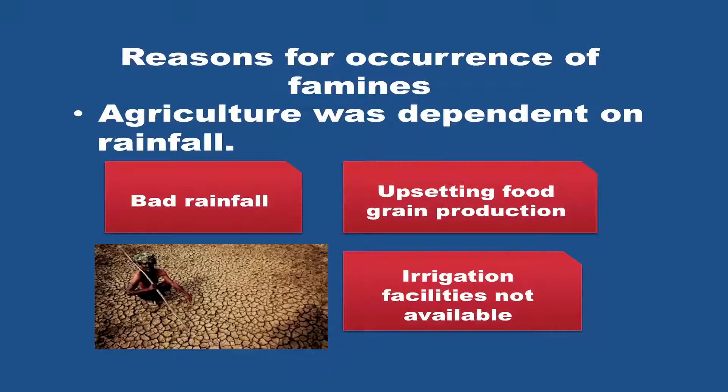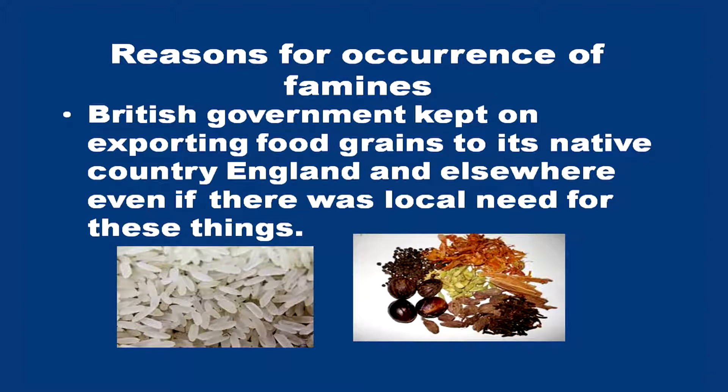The most important reason for famines in our country during the British rule was that agriculture was dependent on rainfall. Bad rainfall upset food grain production, and irrigation facilities were not available. So bad rainfall without irrigation facilities resulted in bad crops, which was one reason for famines. Another important reason was that the British government kept on exporting food grains to England and elsewhere even when there was local need. The food grains were in great demand in India but were not available because the British exported them to Britain and other countries of Europe, resulting in shortage of food grains in India.